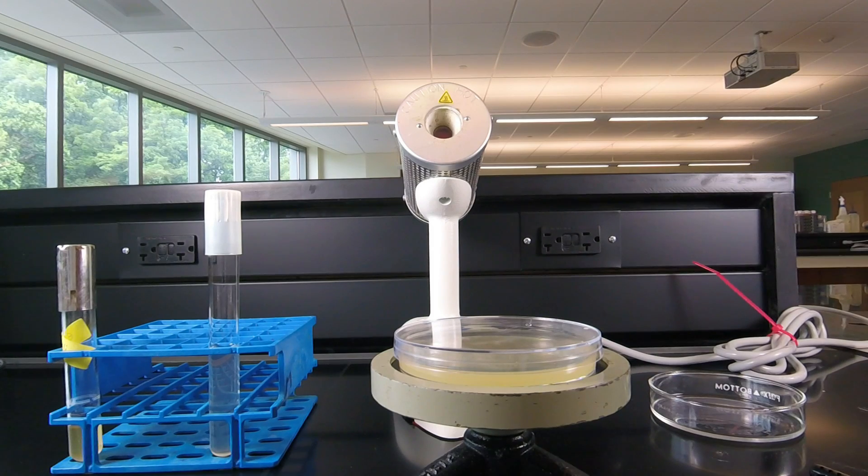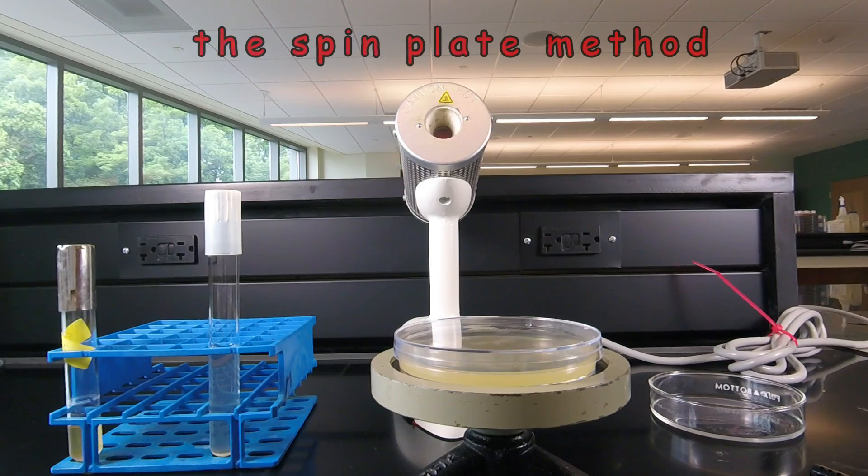In this video lesson we're going to learn how to obtain isolated colonies for cloning using what's called the spin plate method.